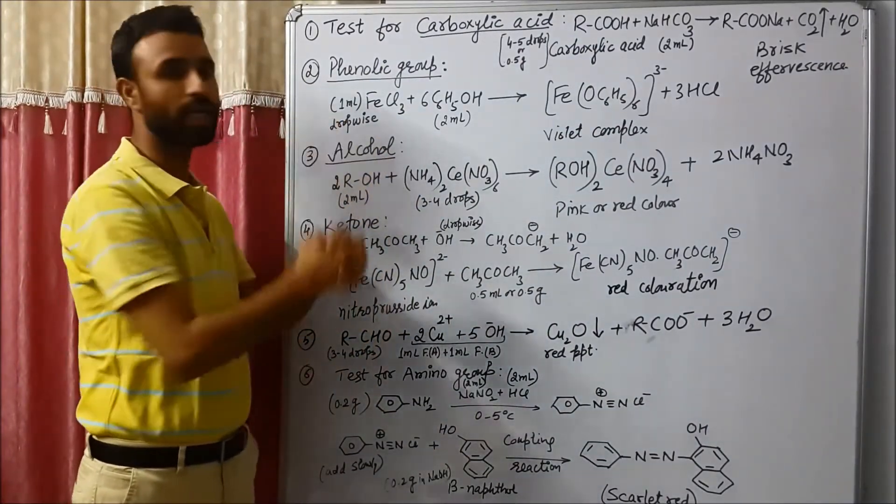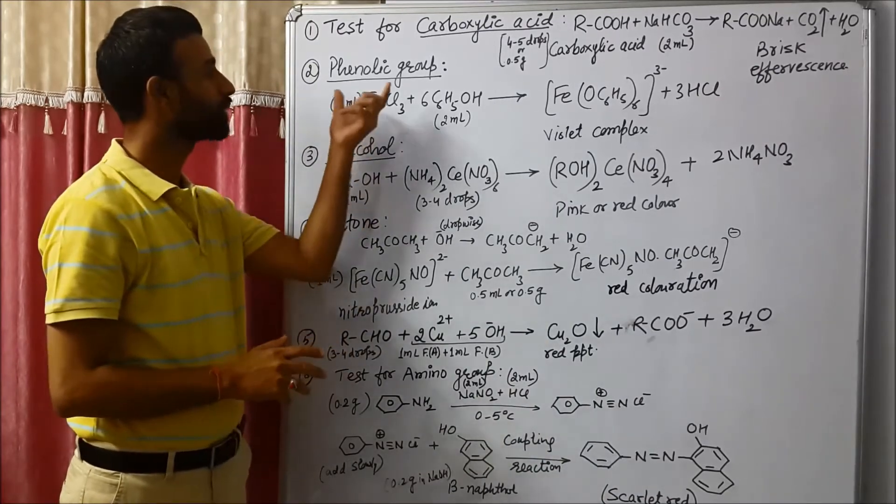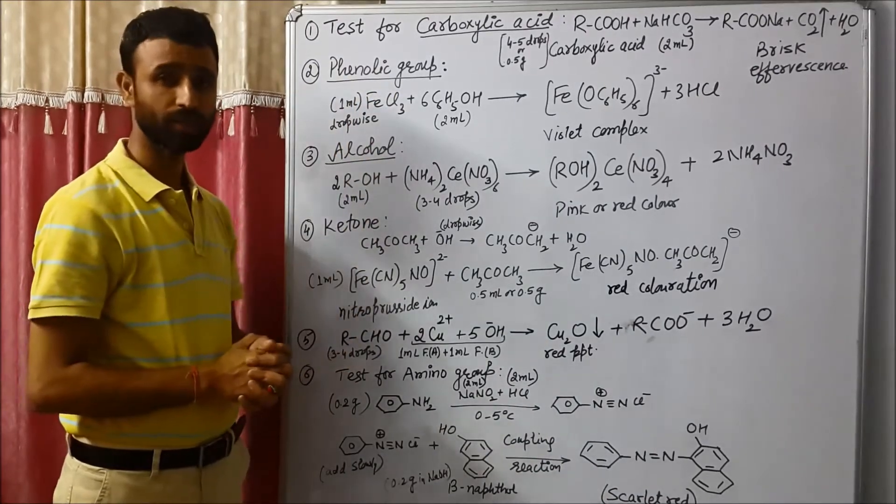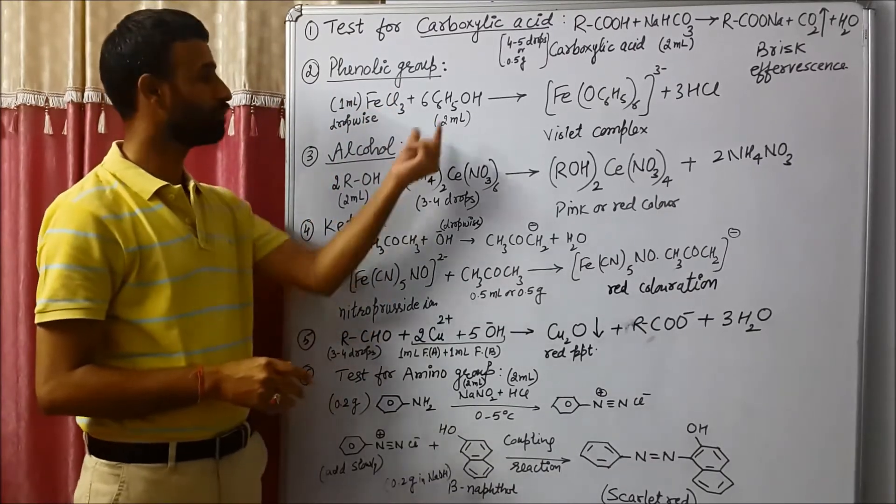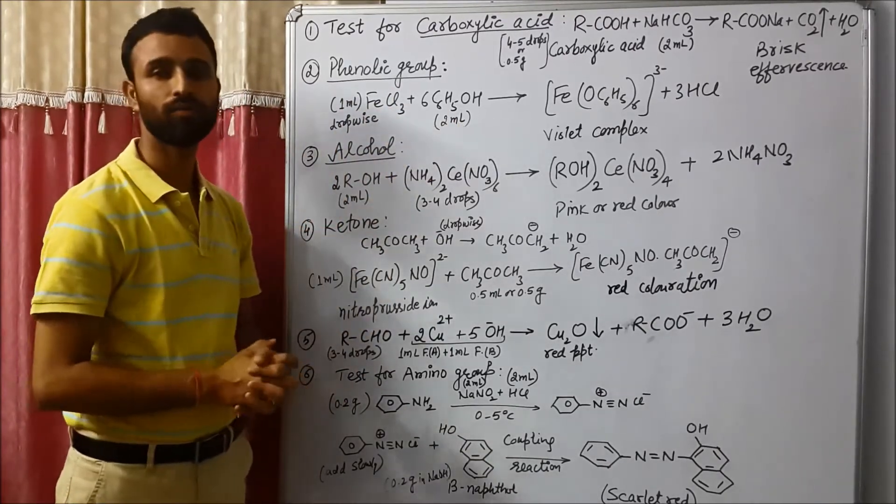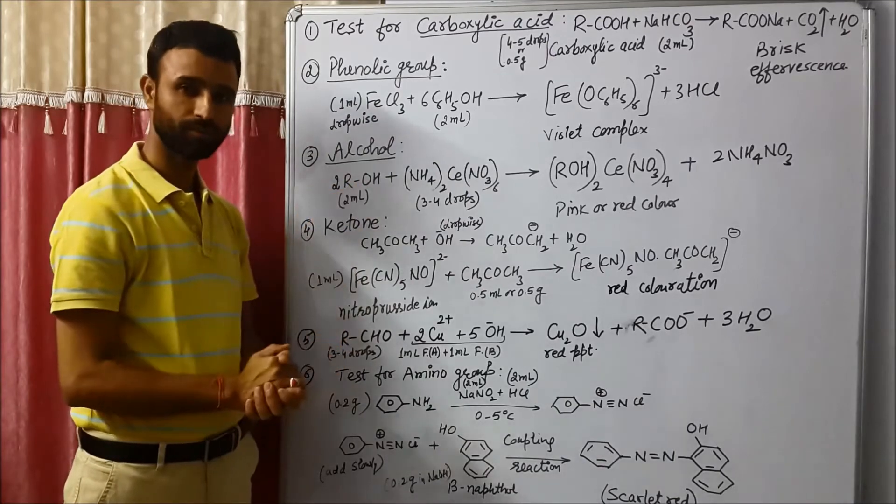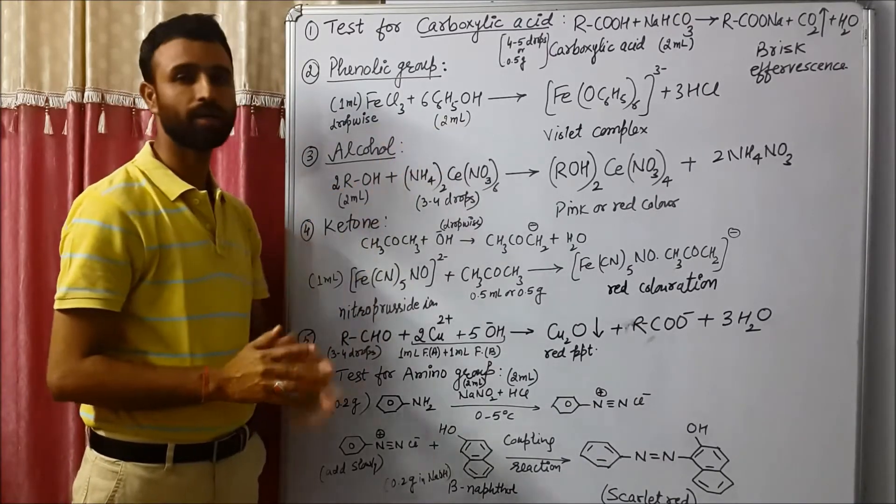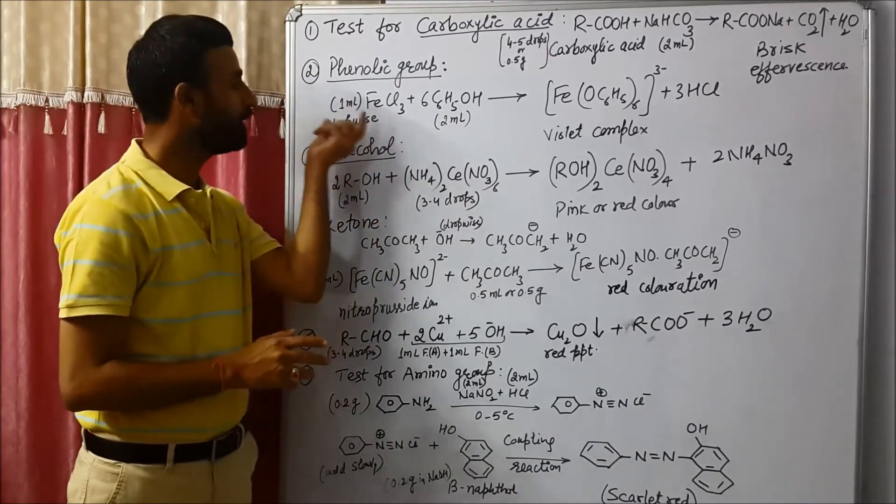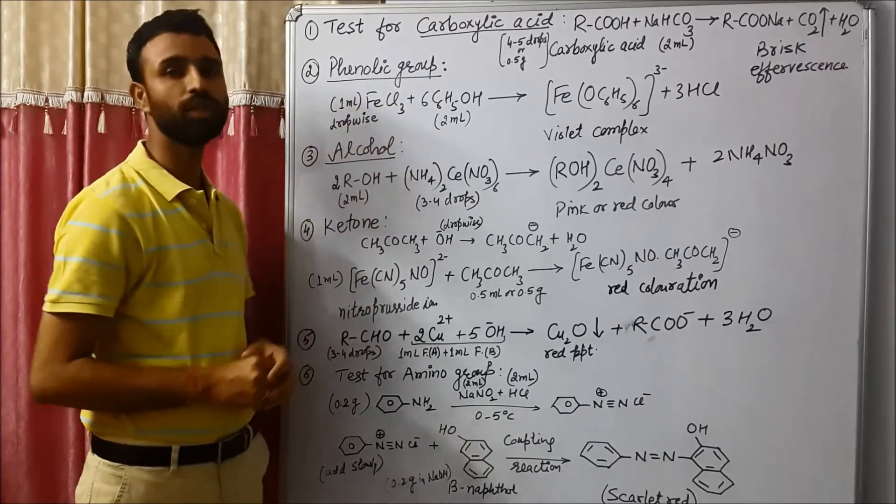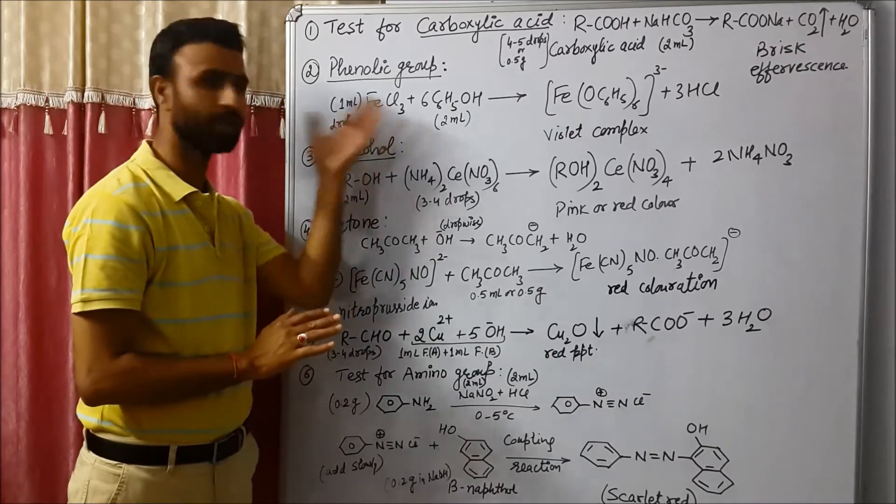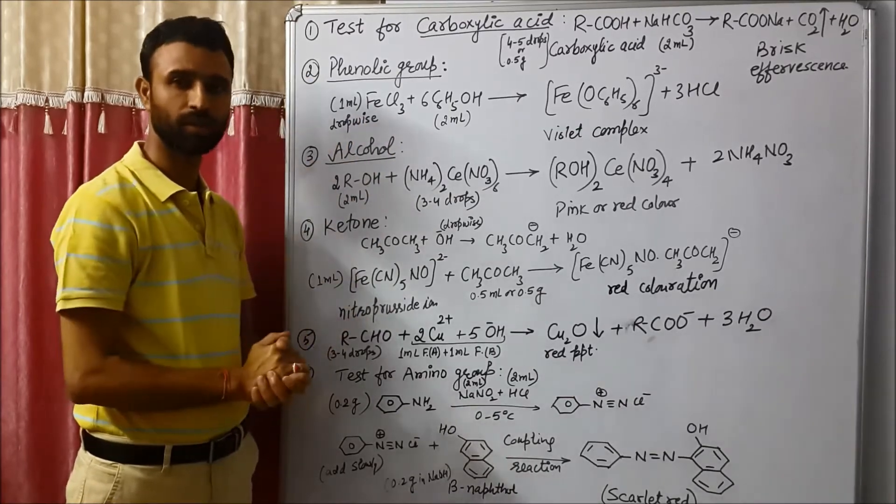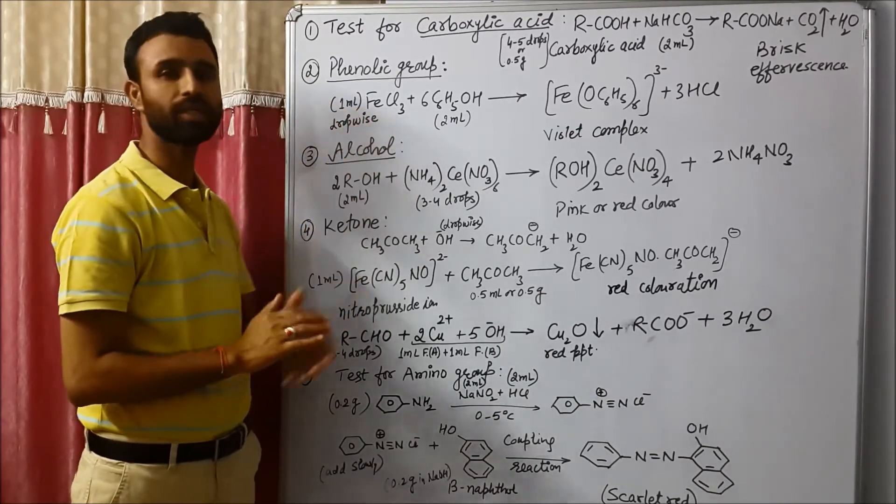Now come to next part, that is phenolic group. In that case, what we do, first we take 2 ml of that organic compound. In that organic compound, we add 1 ml of neutral ferric chloride.